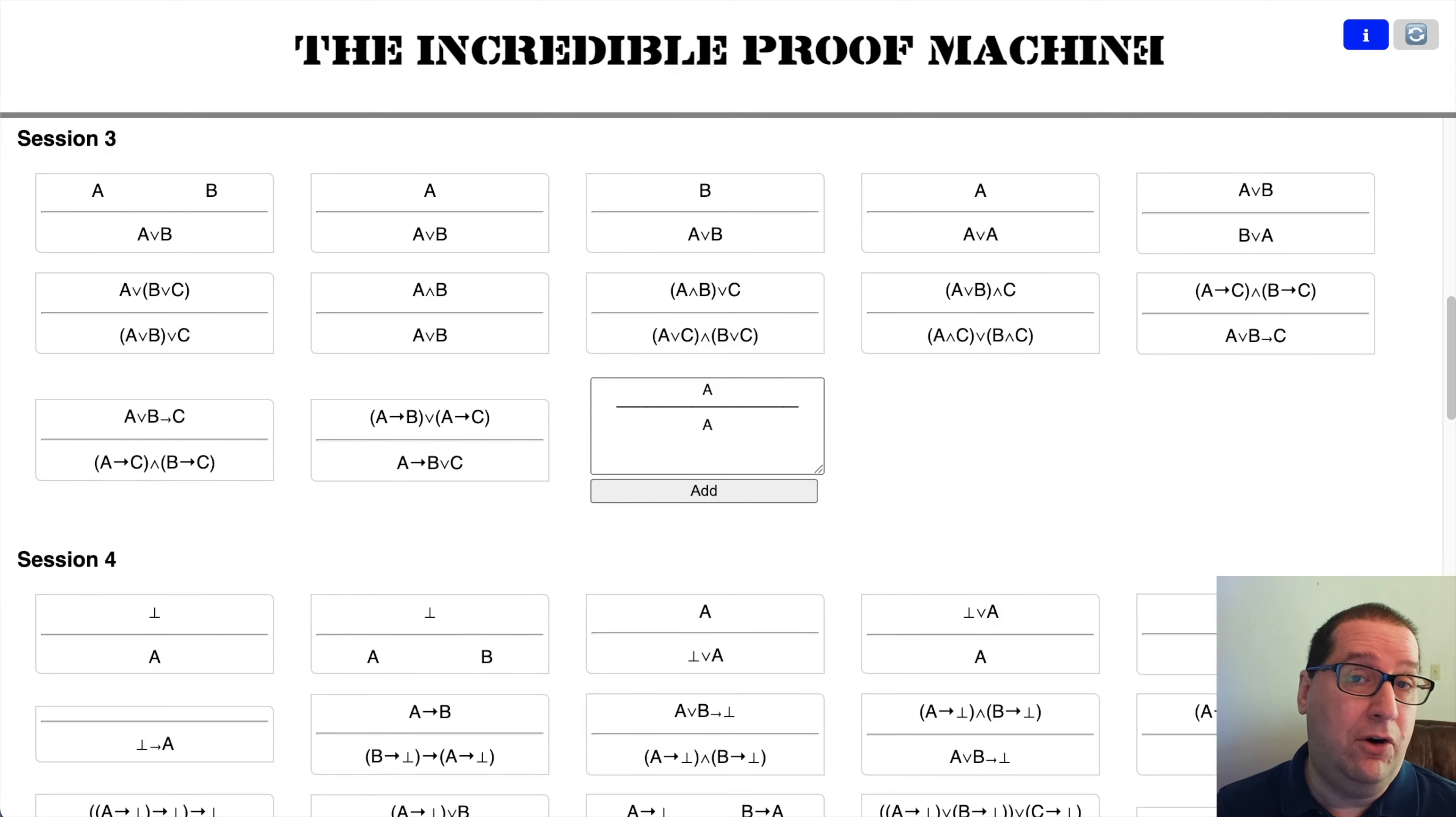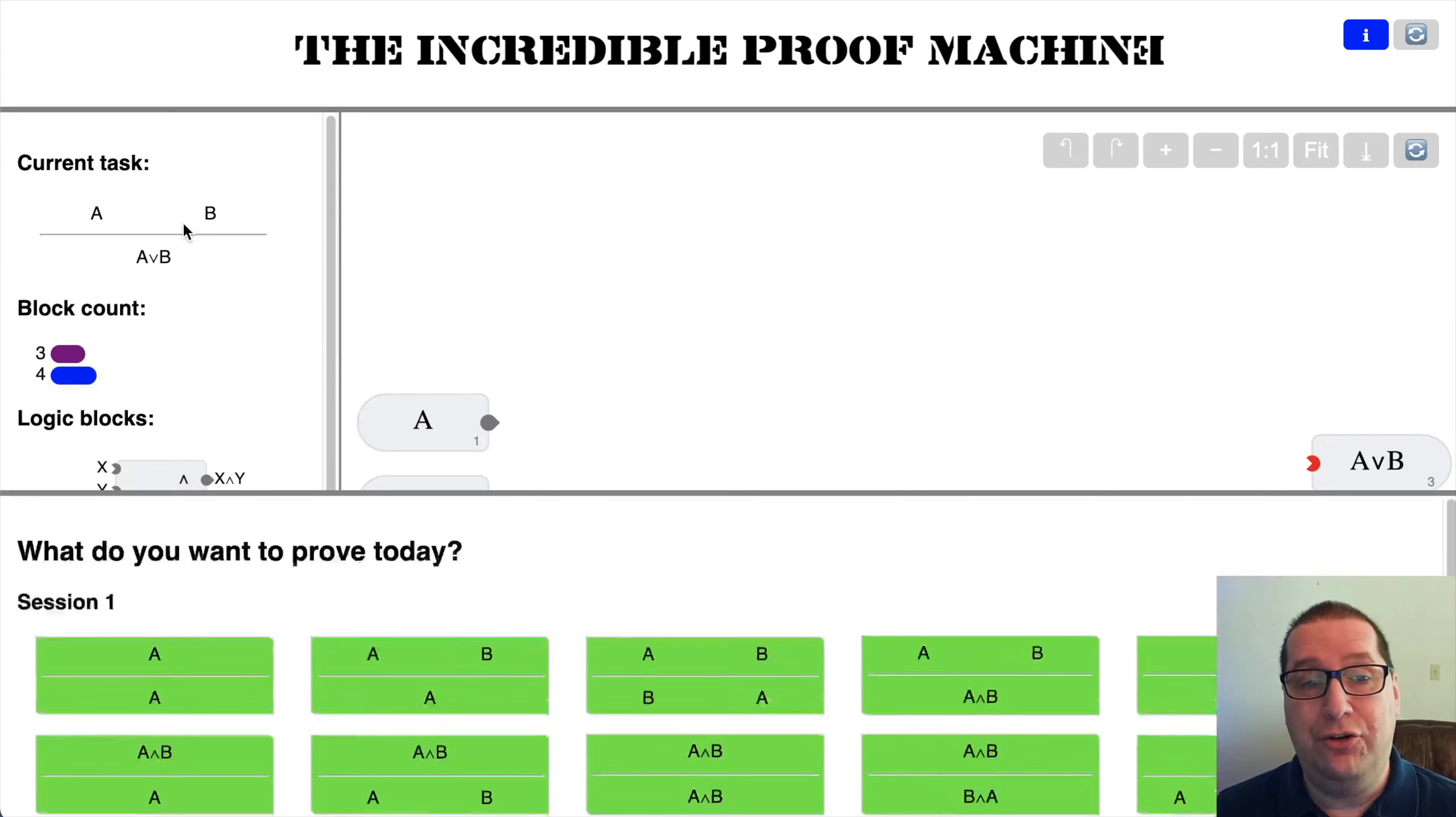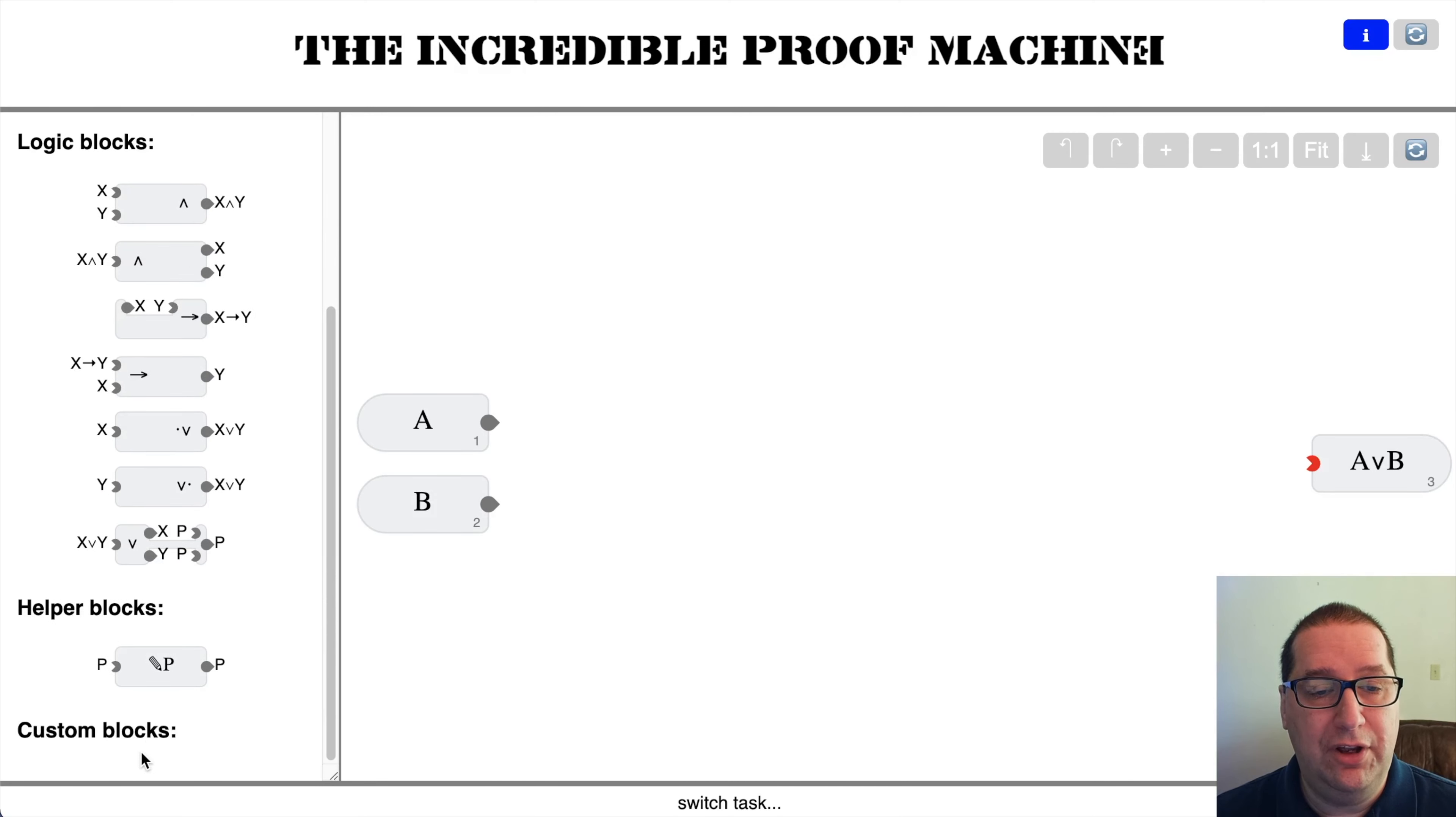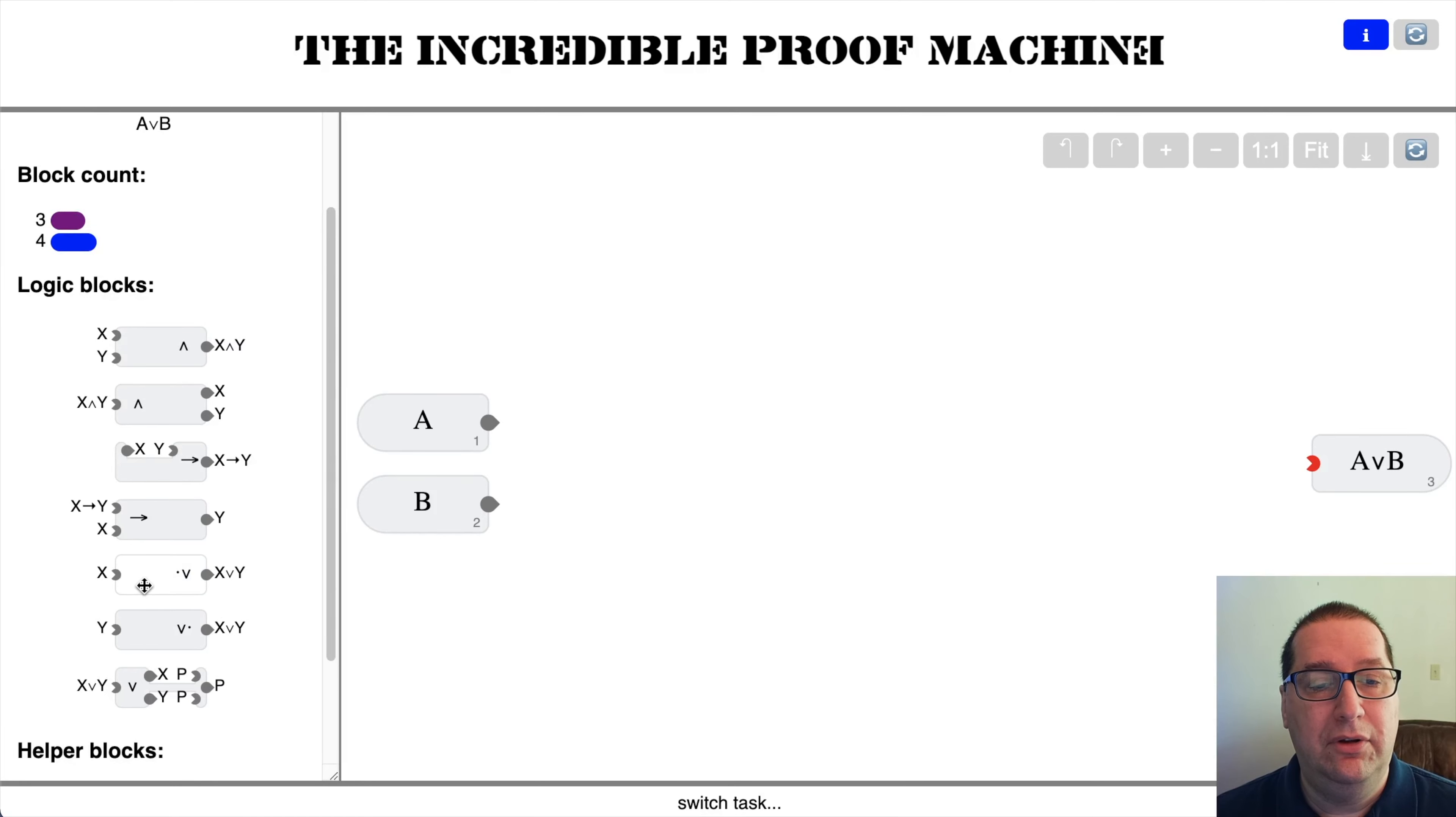Session three is going to be all about the disjunction rules, or OR, the logical OR. So we now have a few more blocks here - we have three blocks. These two blocks here are the OR elimination rules or disjunction elimination. And this rule here, this scary looking block, and it is scary, is the disjunction introduction rule or the OR introduction rule.